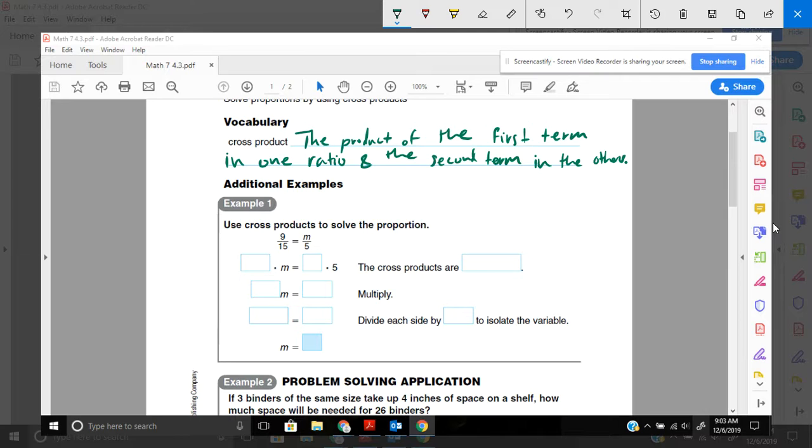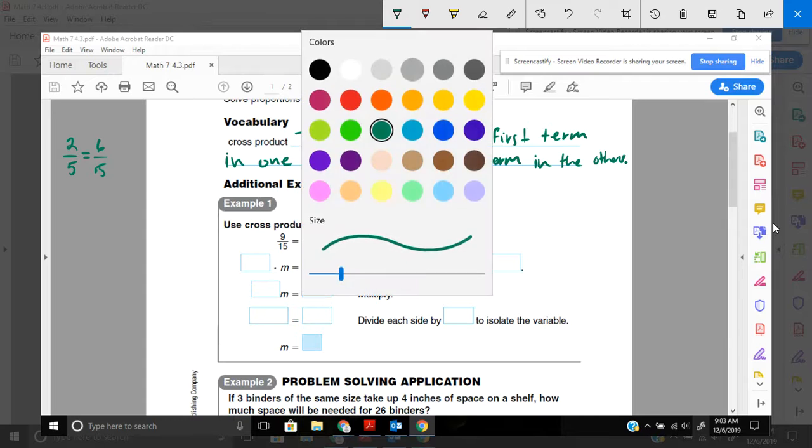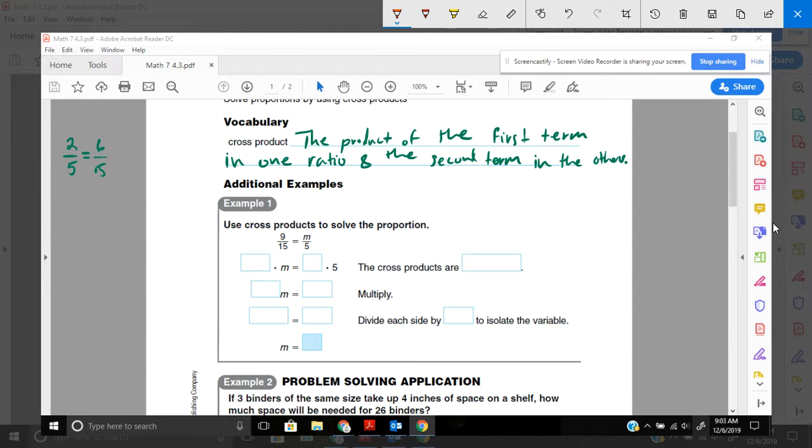Say we're given the proportion 2 fifths equals 6 fifteenths. What the cross products property says is if you look diagonal and you multiply those two things. So here's the first term in one ratio and the second term in the other ratio. That's what this is saying. And you multiply them or find the product of them.